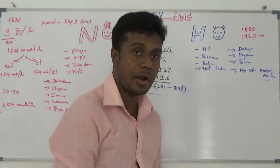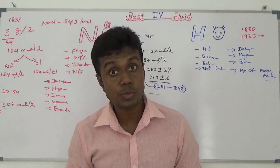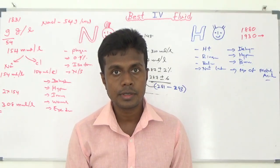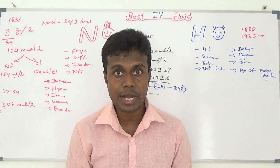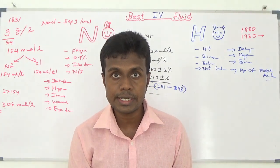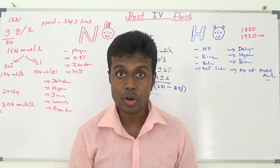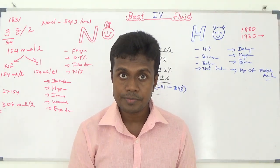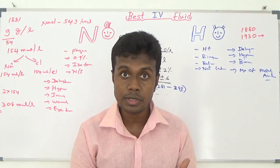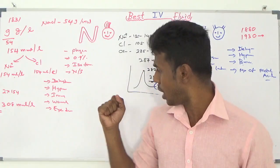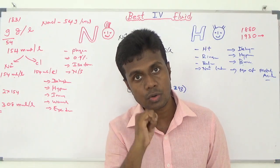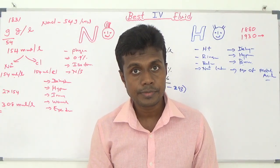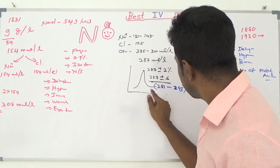If you have osmolality higher than 293, your thirst center is going to be activated — you want to drink more water. Your ADH or anti-diuretic system is going to be activated, and you preserve water from your kidney through activation of aquaporin-2 channels. If you come to have lower osmolality, your thirst center is inhibited, your ADH mechanism is inhibited, and you lose more water — so osmolality is controlled within that range.